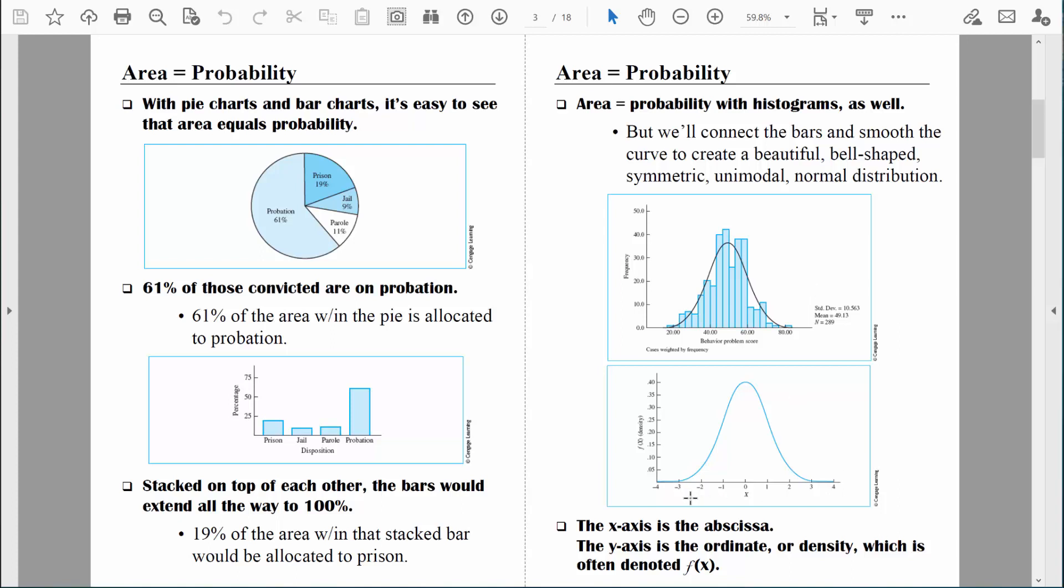And always remember, we have an x-axis right here. And the x-axis always represents our number line. The x-axis is sometimes called the abscissa. We will always just call it the x-axis. But if you encounter that term, I just want you to know what it represents.